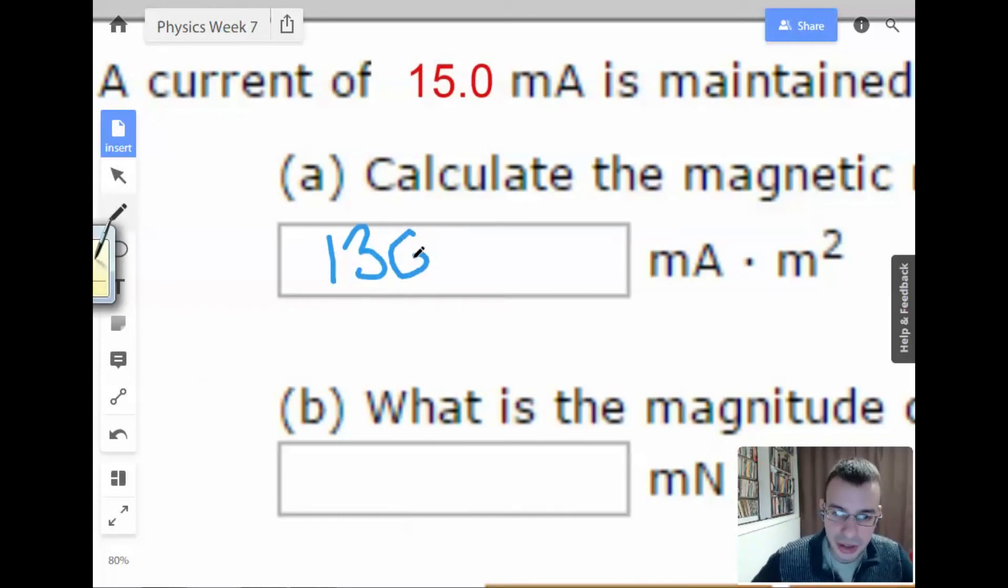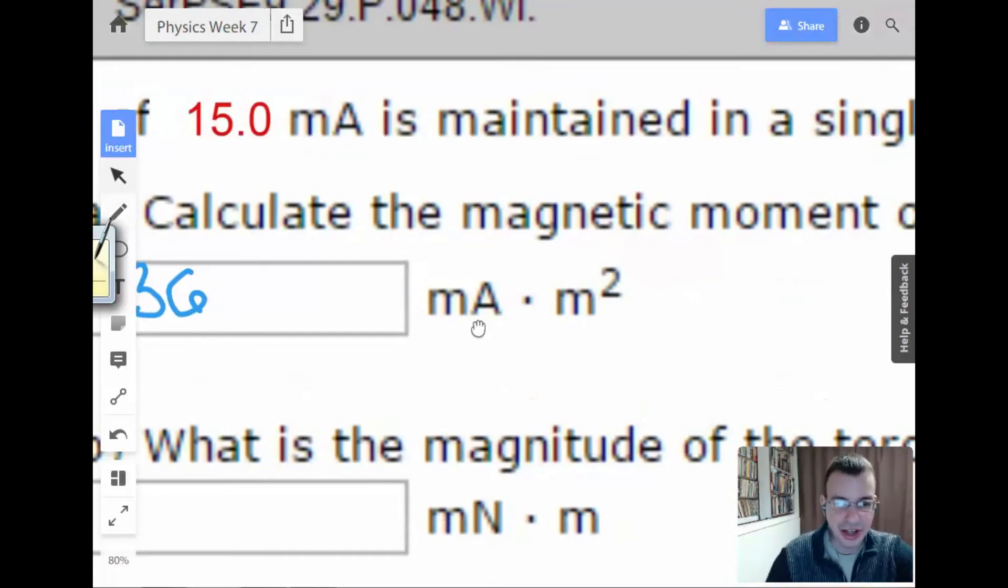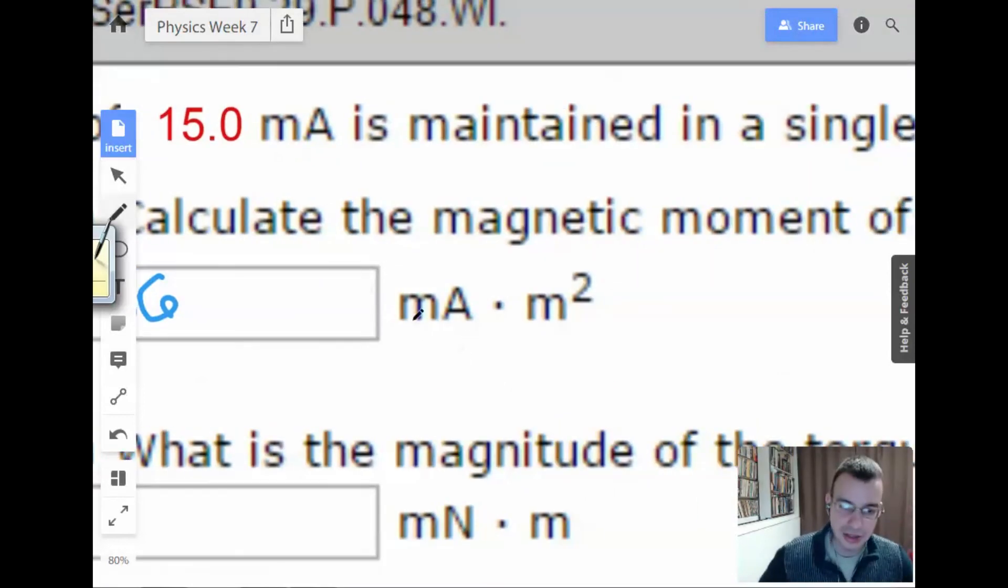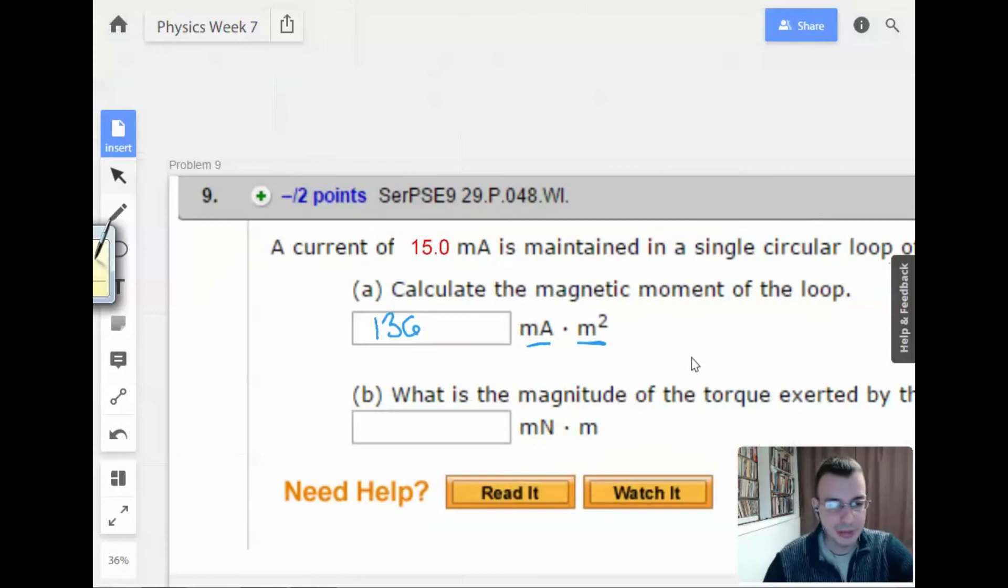And if for some reason you didn't know the formula, I would just dimensional analysis this. Take the current, multiply it by the area. Current times area. Got it.